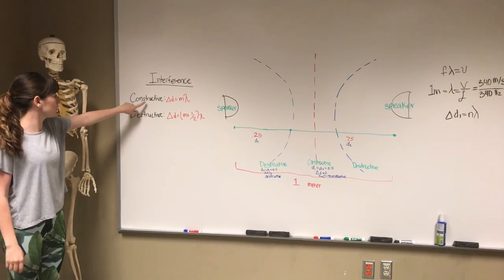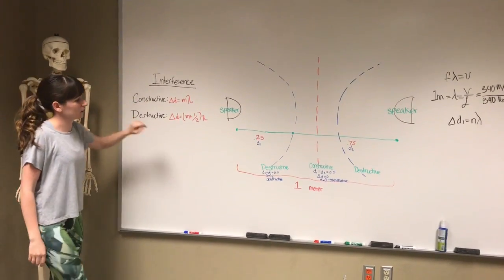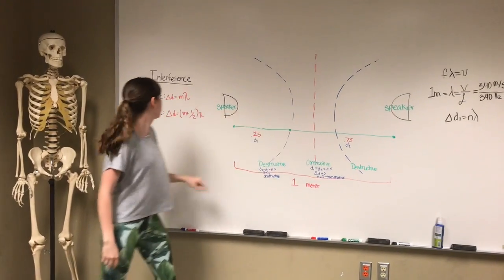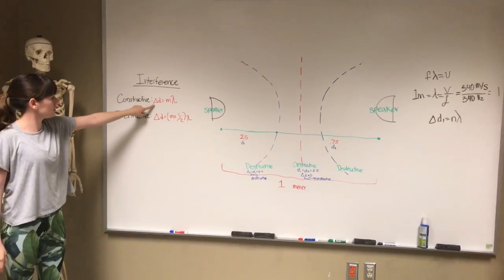The first interference pattern we have is constructive, which is the middle line right here. This is the equation we use to find the path length difference.